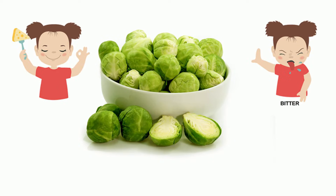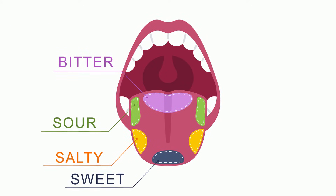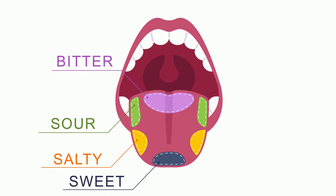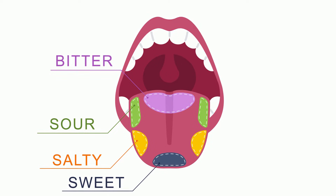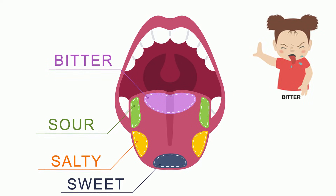One type of taste receptor tastes for a bitter chemical. This PTC receptor is coded by a gene. As a result, for some people like me, brussels sprouts taste very bitter. For others, they do not.